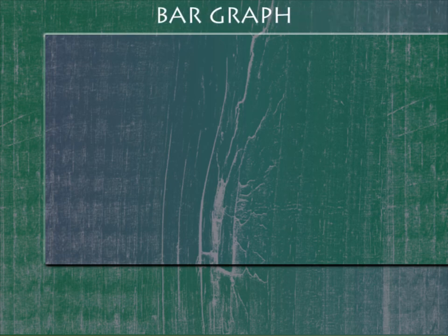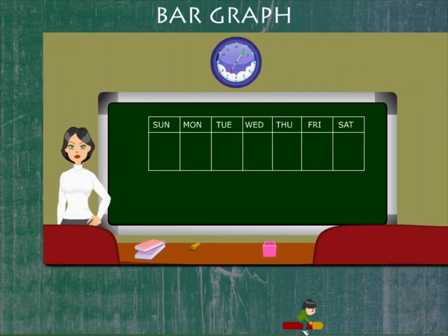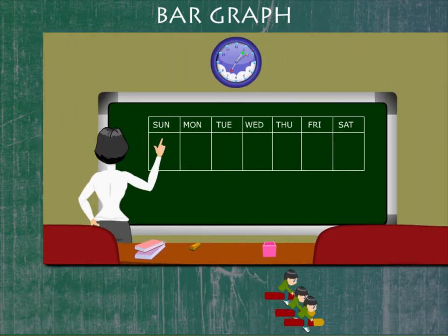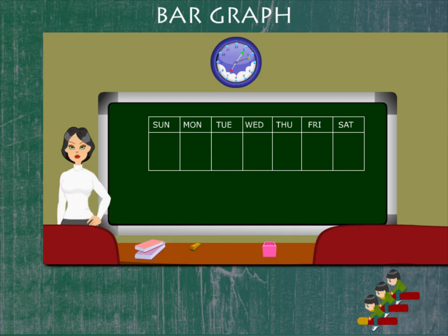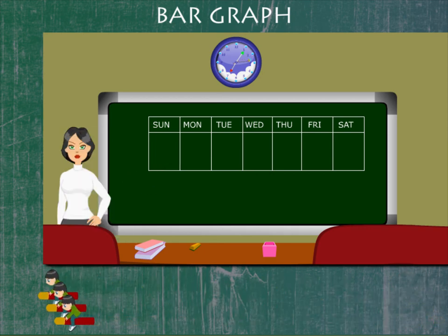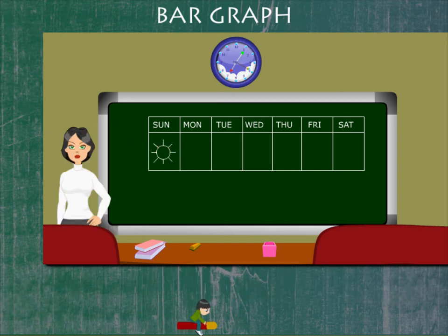Bar graph. Teacher Lucy has a pictorial data chart showing days of the week. She draws a symbol in the first column to show Sunday has been a sunny day.